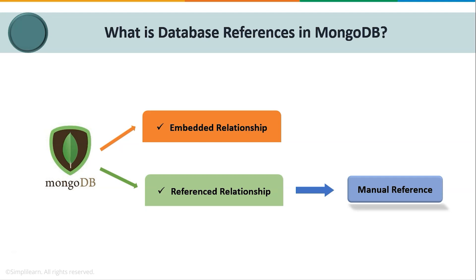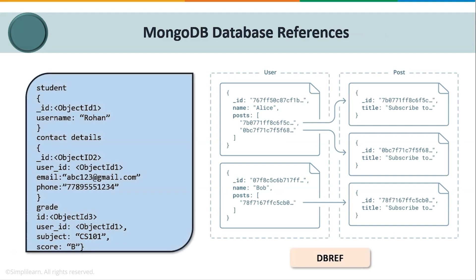MongoDB relationships represent how multiple documents are logically connected. MongoDB provides two types of relationships: embedded and referenced. Embedded documents capture relationships by storing related data in a single document structure. The reference model stores relationships by including links from one document to another. To implement a normalized database structure in MongoDB, we use reference relationships — also referred to as manual references — where we manually store the reference document ID inside another document.